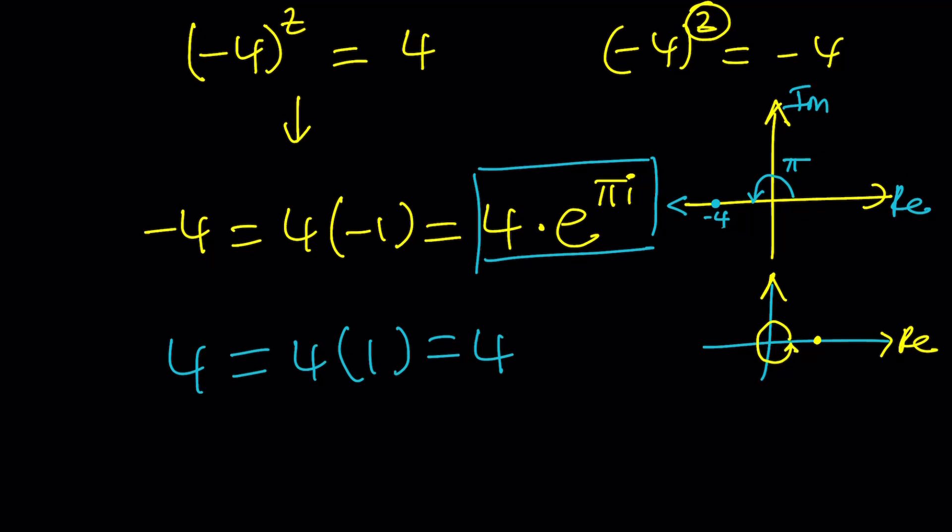So we can basically use an argument of 0 or 2 pi or 4 pi radians. In other words, any multiple of 2 pi. So let's just go ahead and use 2 pi k for that. Okay? Awesome.